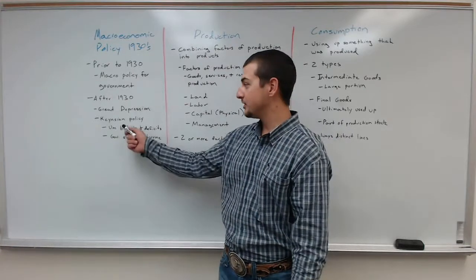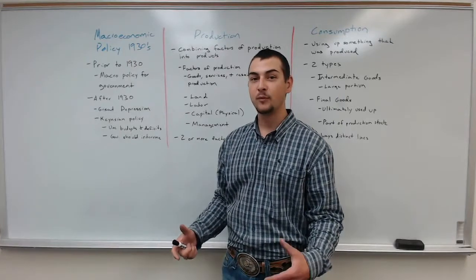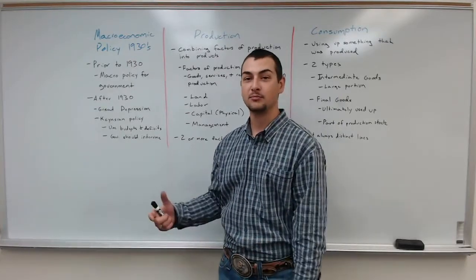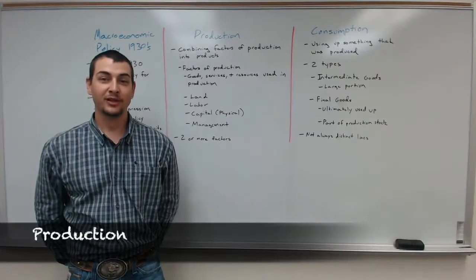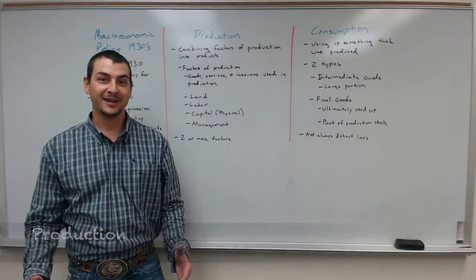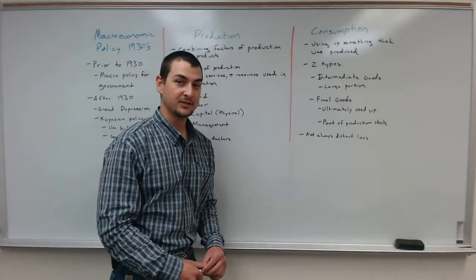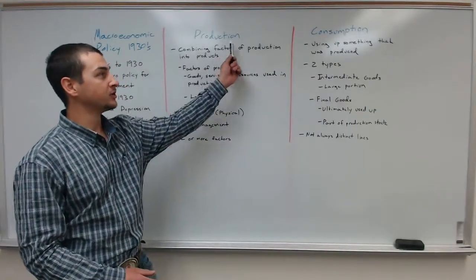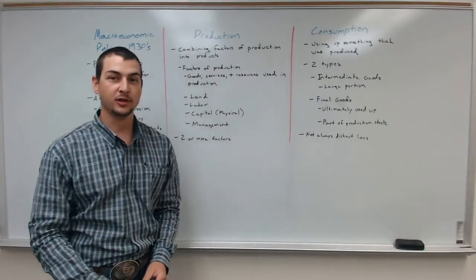Whenever these two things came about in the 1930s, it started adjusting how people were looking at macroeconomic policies for governments. Within macroeconomics, we view the economy as a continual process of two independent activities: the production side and the consumption side. Let's first dive into what production is.